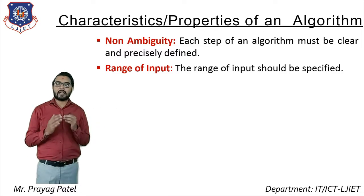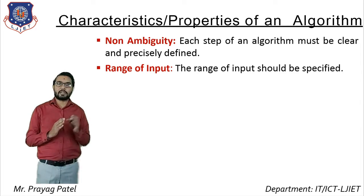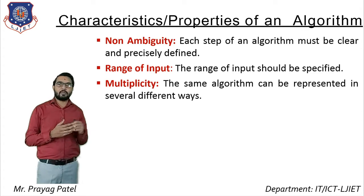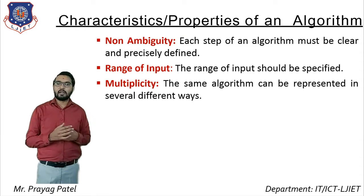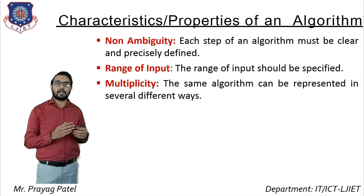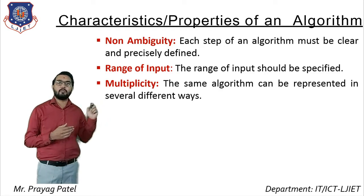The second property is range of input — the range of inputs should be specified for each algorithm. Third is multiplicity, meaning the same algorithm can be represented in several different ways. For example, for searching you can write the algorithm as sequential search or binary search. You can also express multiplicity by writing the algorithm using pseudocode, natural language, or flowchart.